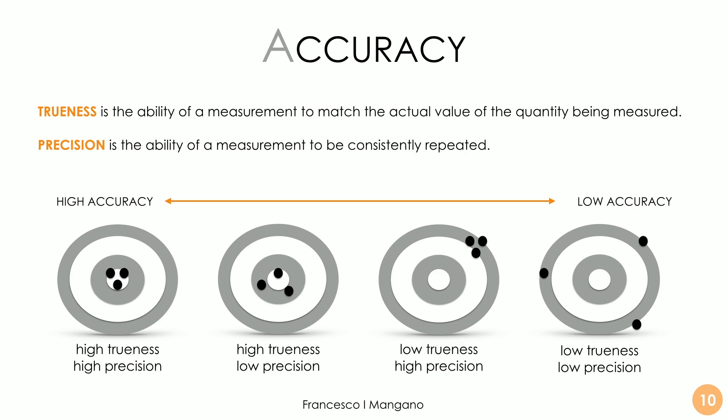Accuracy is the sum of trueness and precision. Trueness is probably more important because it is the ability of a measurement to match the actual value of the quantity being measured. But precision is also important because it is the ability of a measurement to be consistently repeated. Technically, a scanner could be very true with low precision, or very precise with very low trueness. Obviously what we want is a highly accurate machine with high trueness and high precision in order to have a reliable device for clinical use.